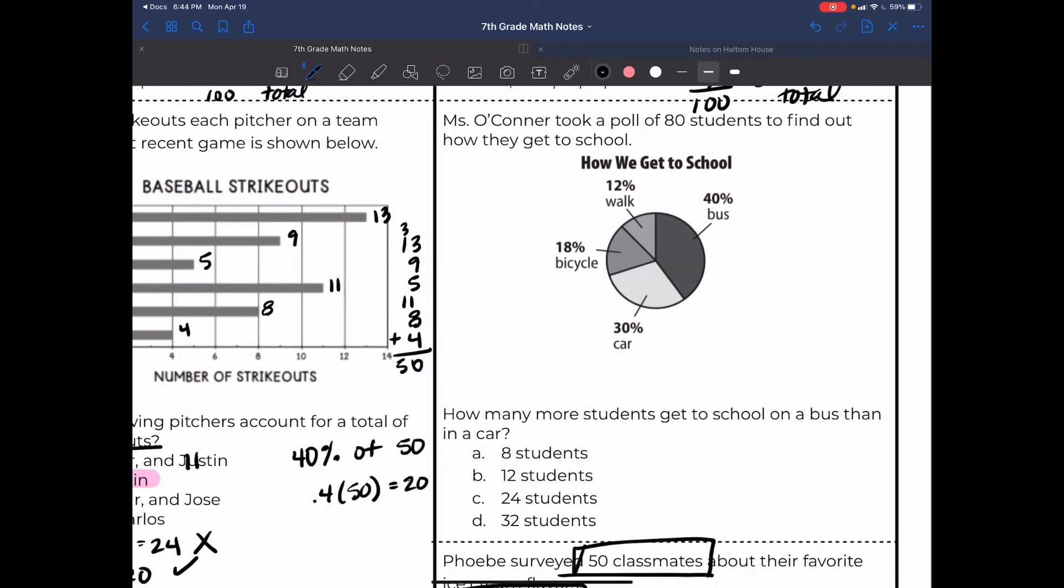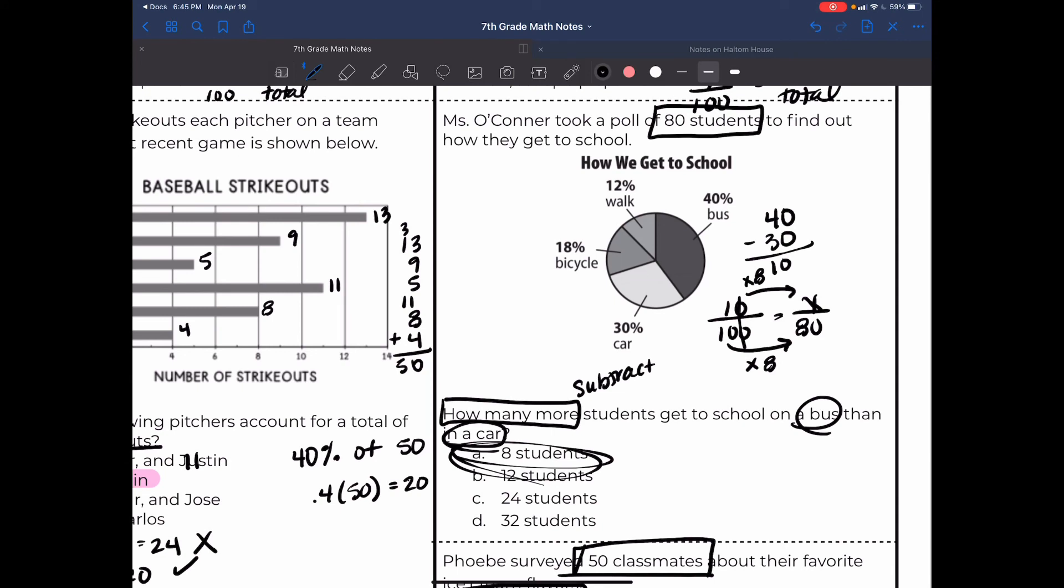Okay, choose whichever strategy you want to use and try that for this one with Miss O'Connor. She took a poll out of 80 students, so you know that that's your total, and you're trying to figure out how many more students get to school on a bus than in a car. All right guys, I chose to subtract before, just to find out how much more in percent did students get on the bus than in a car, which is 10. So 40 minus 30 is 10, and then I found, right here, what 10 percent of 80 is. I crossed off my zeros and I got 1 out of 10, and I just use scale factor - 10 times 8 is 80, so I know 1 times 8 is my answer. Or you could have just found 10 percent of 80, which means you move the decimal to the left one time, which is 8.